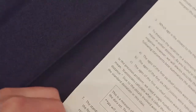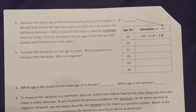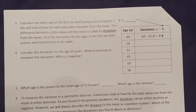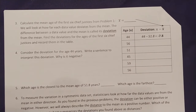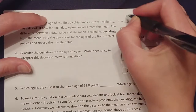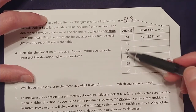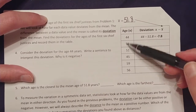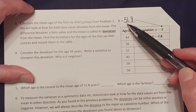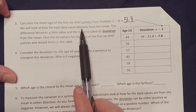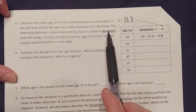We calculate the mean age of the first six chief justices. From our section 6a lecture notes, the mean age was 51.8 years. To find the mean, you add up all the numbers and divide by how many there are — since there are six chief justices, you add up their ages and divide by six. This notation x-bar represents the mean. We will now look at how far each data value deviates from the mean; this difference is called its deviation from the mean.